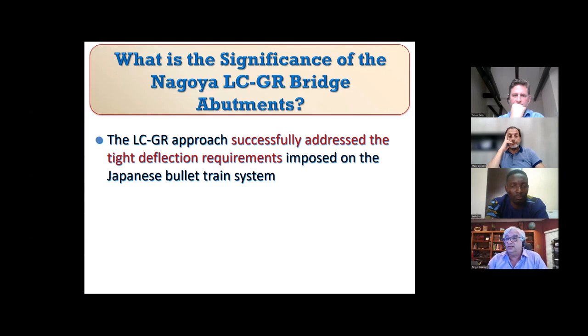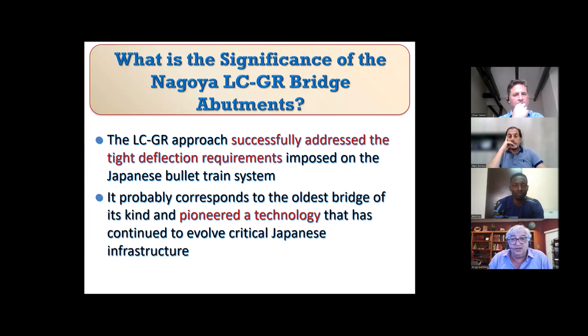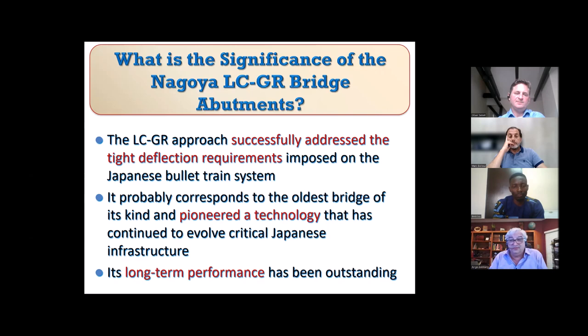The reason this technology was chosen for the bullet train was that it needed to satisfy very stringent deflection tolerance requirements. Those tight tolerances were met with this new technology, and the structure is now over 30 years old with outstanding long-term performance — not just stability, but deflections remain within tolerance.